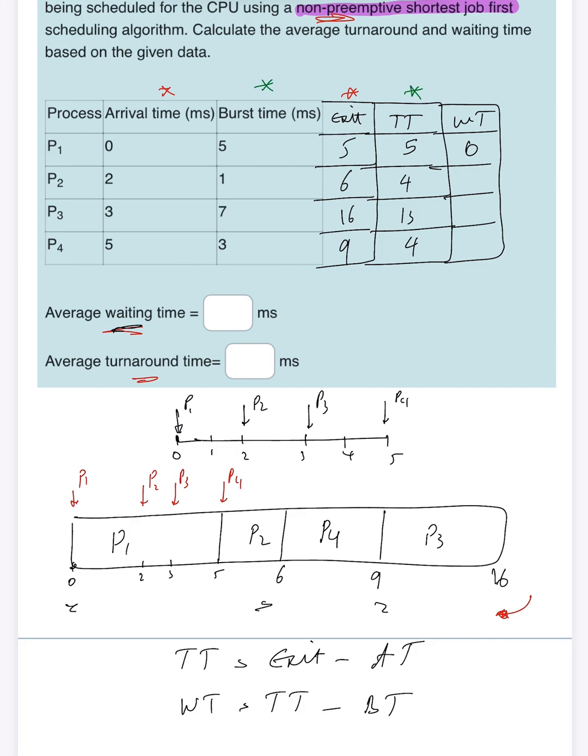The next one, process two, 4 minus 1 is 3. It makes sense, as you see, because it arrives at second two but got CPU time at second five, so it waited three milliseconds. Similar to that, 13 minus 7 is 6, and 4 minus 3 is 1. We found all of them.